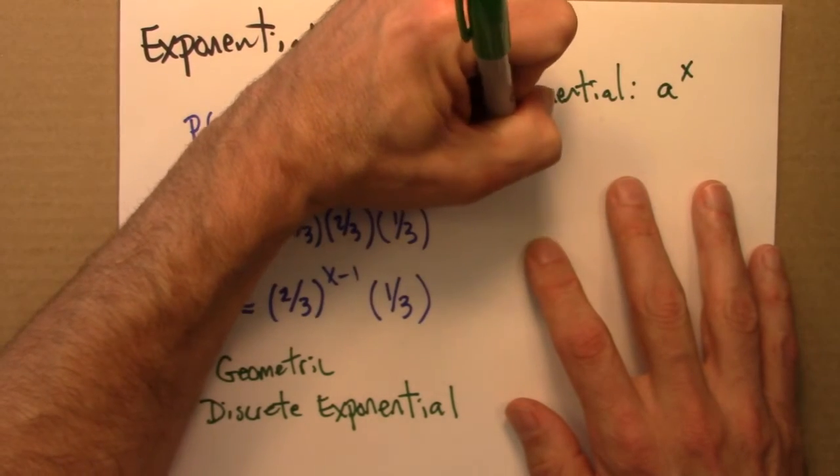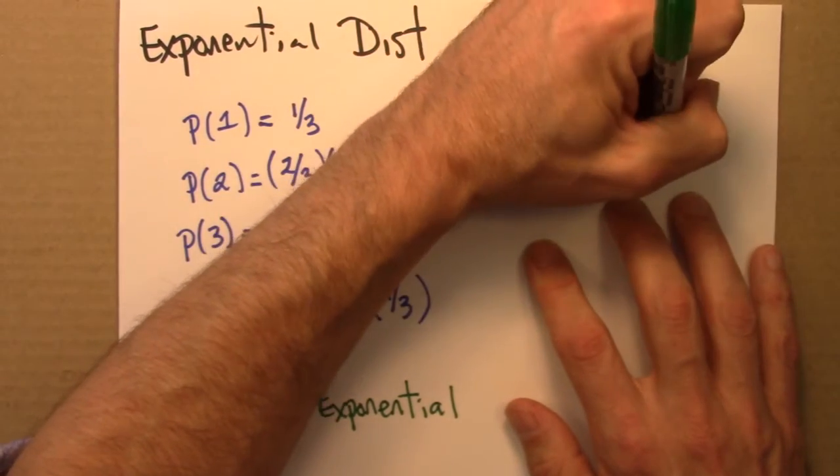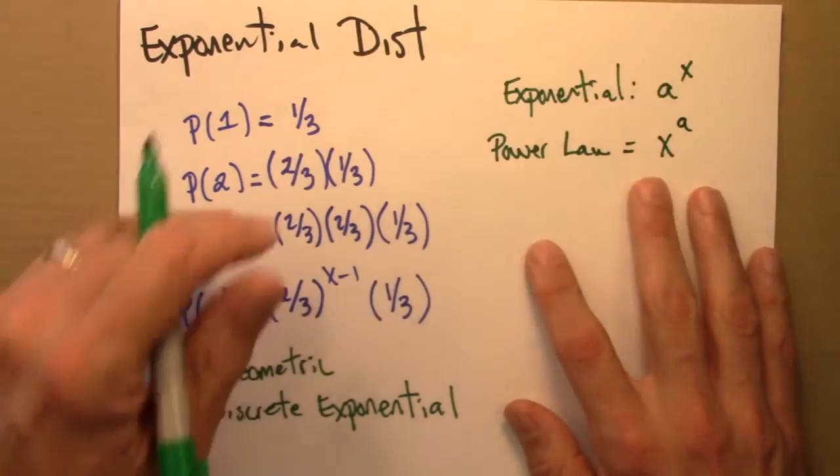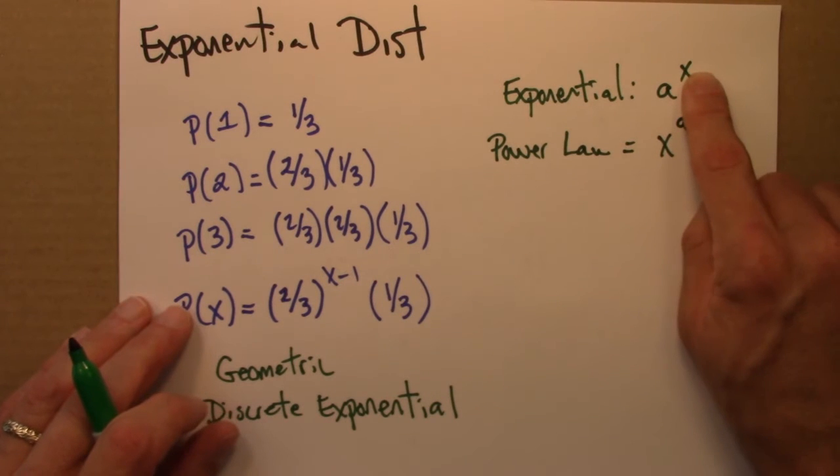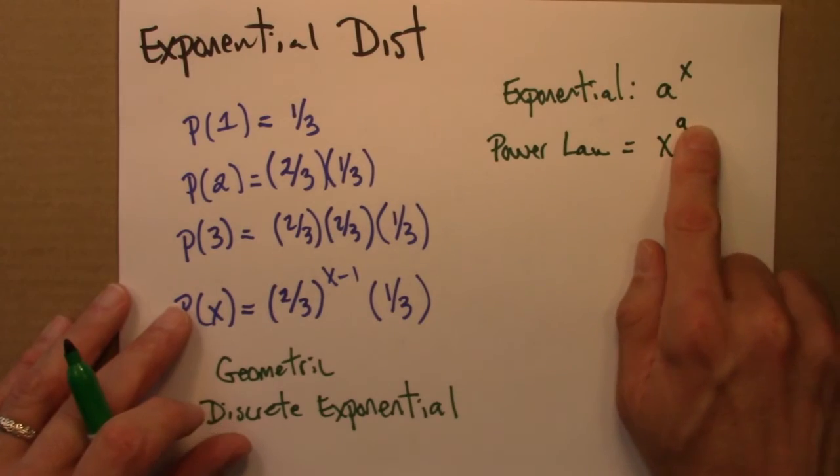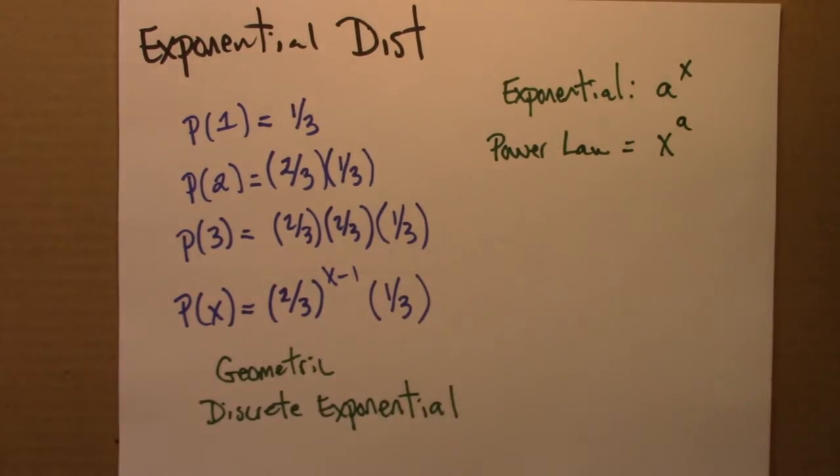And the power law, so for an exponential function, the variable is up in the exponent. For a power law or a power function, it's the variable raised to a power. So we have this sort of distribution.